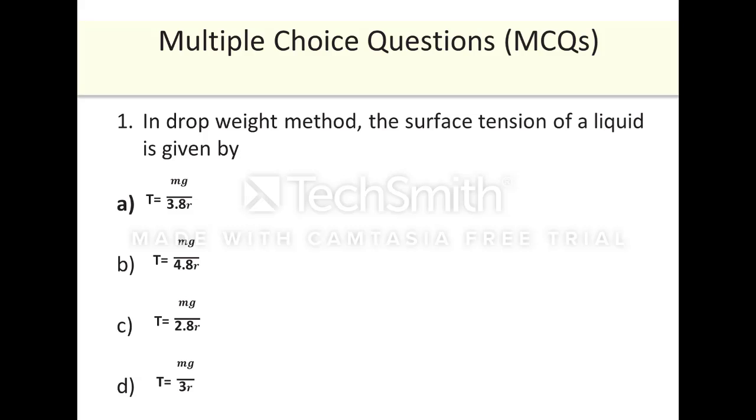Multiple choice questions. Question number 1: In a drop weight method, the surface tension of a liquid is given by: Option A, T equals mg by 3.8R; Option B, T equals mg by 4.8R; Option C, T equals mg by 2.8R; Option D, T equals mg by 3R.